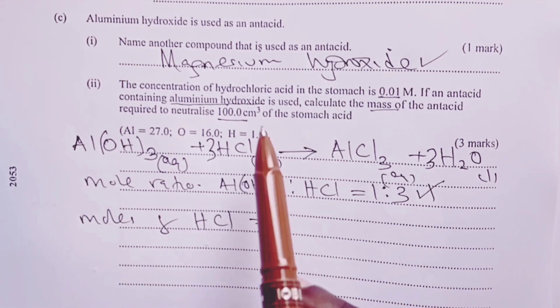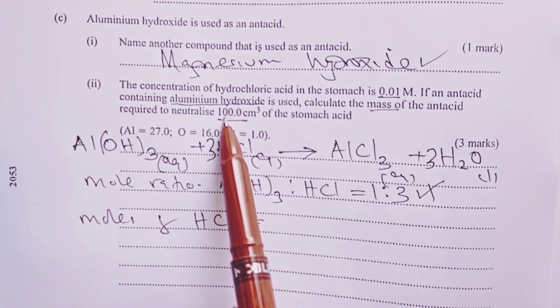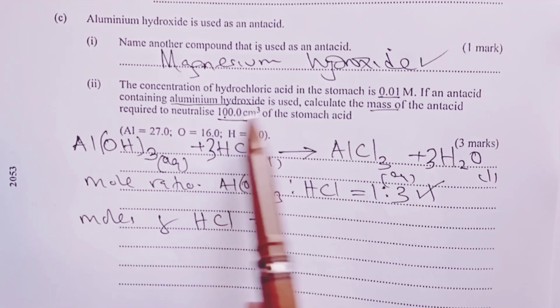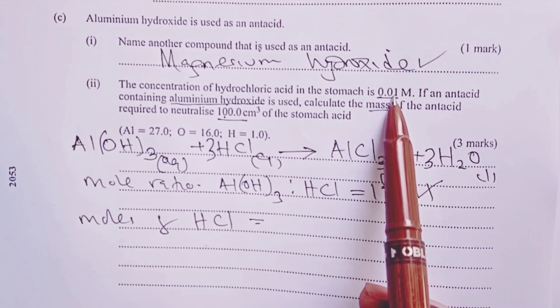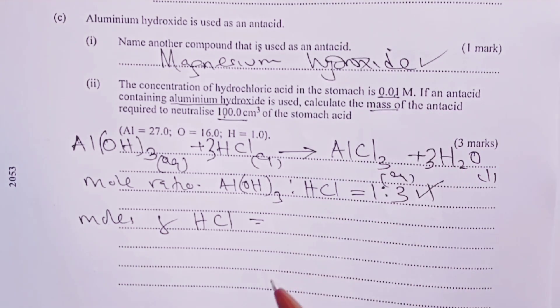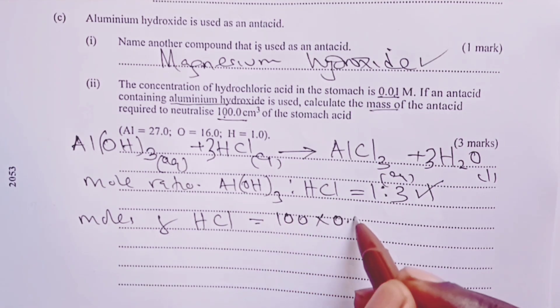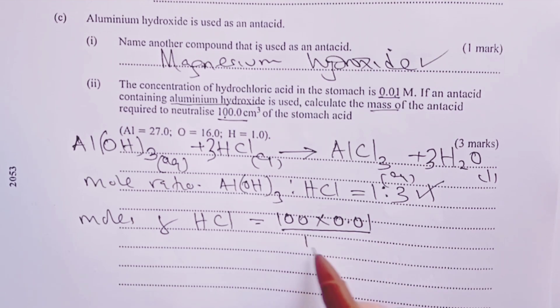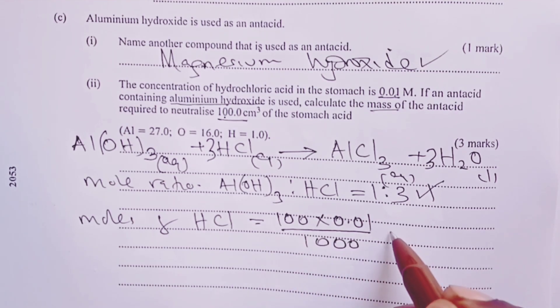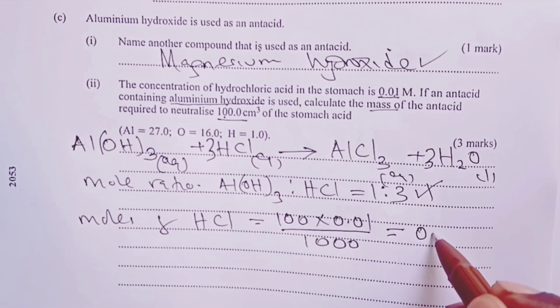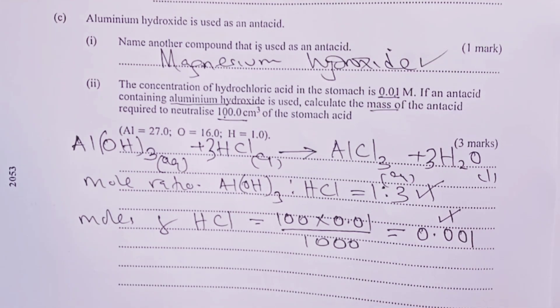Once we have gotten that ratio, we would proceed to now calculate moles of our hydrochloric acid that was present. We had a volume of 100 cm³ and molarity or concentration was 0.01 M solution. So here we shall do 100 × 0.01 ÷ 1000. So moles of hydrochloric acid in the stomach at that point were supposed to be 0.001 for our next half mark.